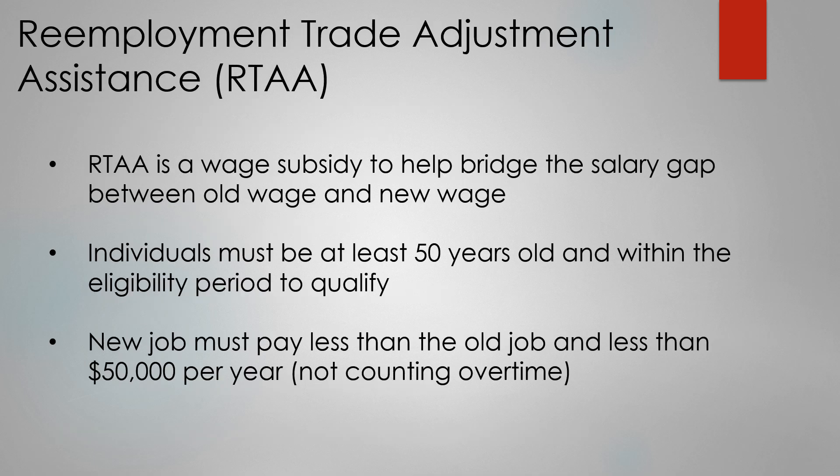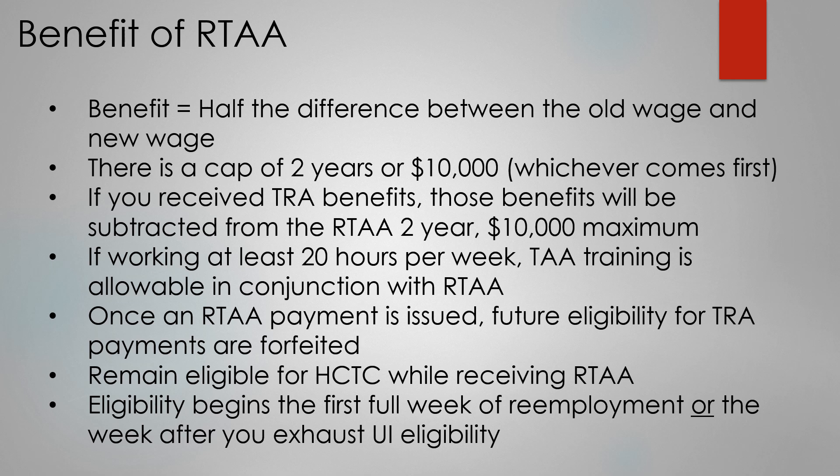Reemployment Trade Adjustment Assistance, also known as RTAA, is a wage subsidy for workers age 50 or over who are reemployed at an annual wage of $50,000 or less. The wage subsidy has a cap of two years or $10,000, whichever comes first, that is available to reemployed older workers and covers a portion of the difference between a worker's new wage and their old wage. To utilize this benefit, the worker must complete a RTAA application at West Michigan Works and submit the last full pay stub from the TAA-certified company and new employment verification.